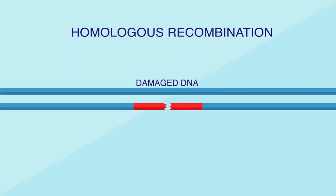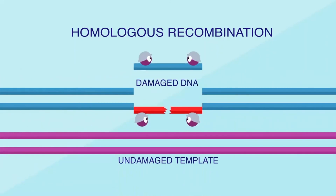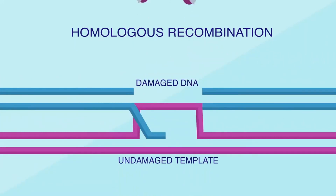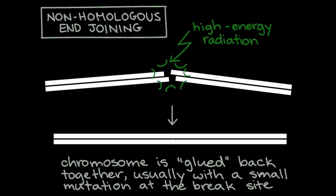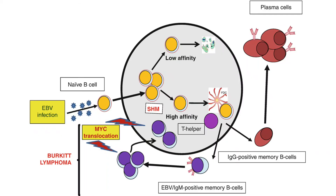For double strand breaks, there are two mechanisms: homologous recombination and non-homologous end joining. In homologous recombination, an undamaged section of similar DNA is used as a template to repair the DNA. In non-homologous end joining, no template is used — a series of proteins cut off a few nucleotides and fuse the broken ends back together. Without a template, this may cause errors and mix up genes. Errors occurring in non-homologous end joining can lead to diseases such as lymphoma and leukemia.